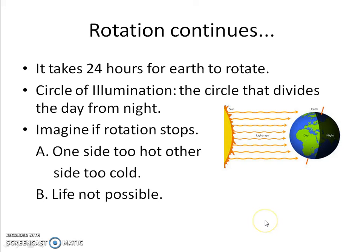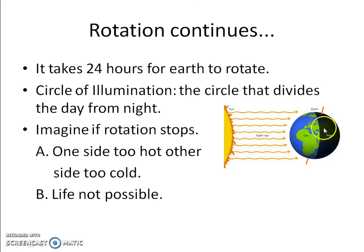Now, rotation continues. It takes 24 hours as discussed earlier. We keep time from the rotation of earth — 24 hours pass and the date also changes. So date and time are kept as per the rotation of earth. As you can see in this picture, there is a circle of illumination — the boundary on earth dividing the part in day from the part in night. This is known as the circle of illumination.